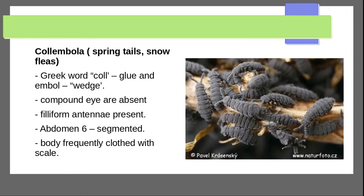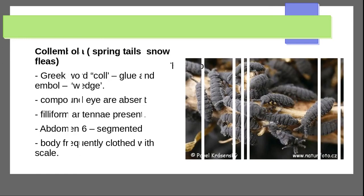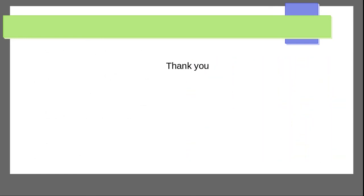Collembola, or springtails, are named from the Greek words for glue and spring. Compound eyes are absent, but antennae are present. The abdomen has six segments, and the body may be covered with thread-like scales. That covers the main groups of insect classification.